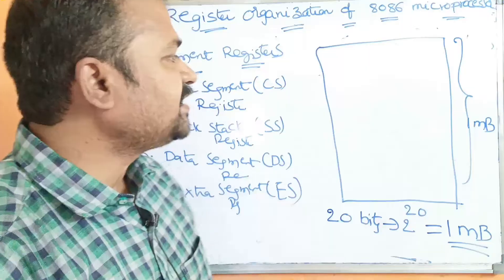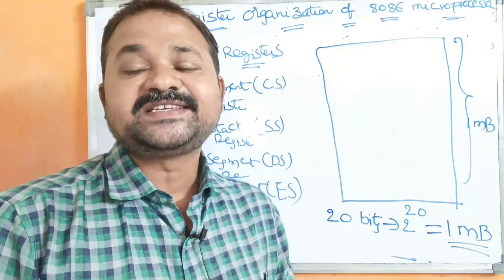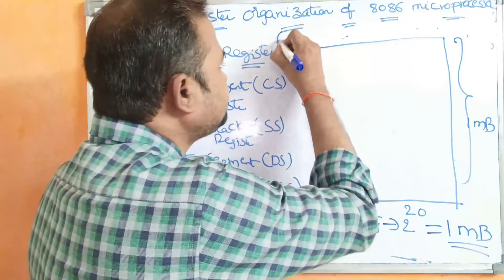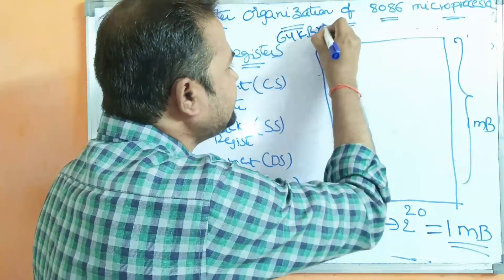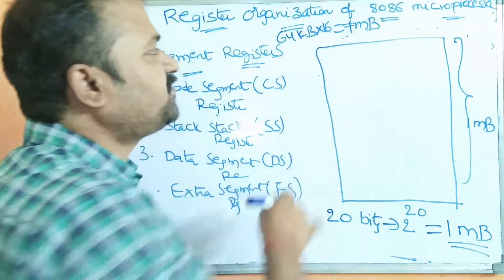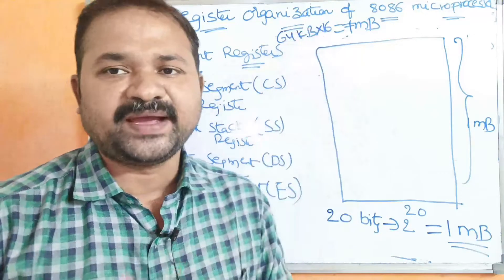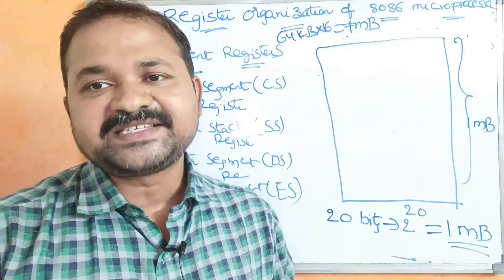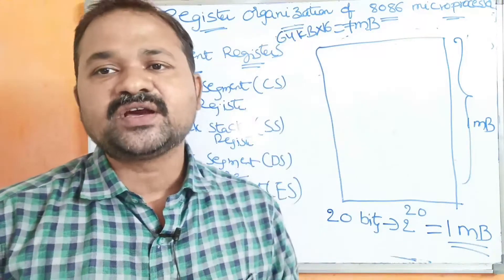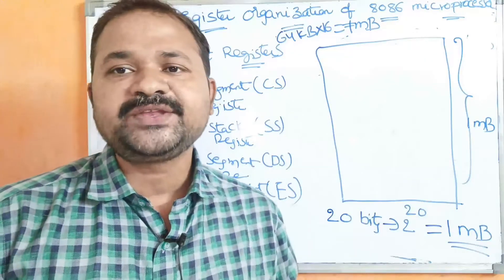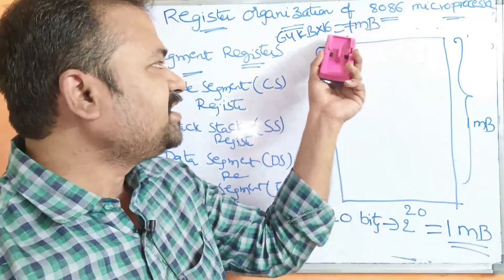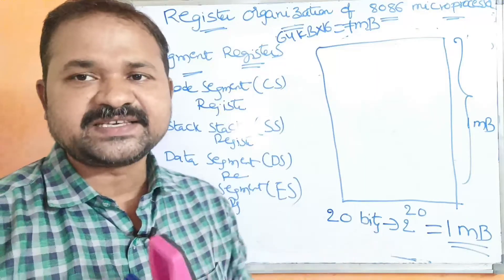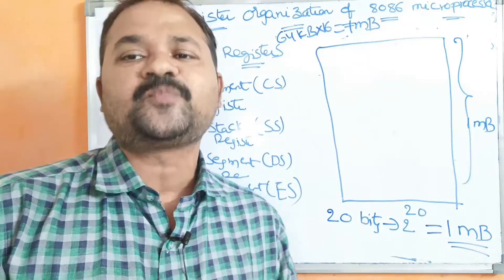The size of each segment is 64 kilobytes. Since 64 kilobytes multiplied by 16 equals 1 MB, the main memory can be divided into 16 segments, where the maximum size of each segment is 64 kilobytes. Here, for simplicity — that is, to cover the four types of segment registers — we are dividing the main memory into 4 parts.